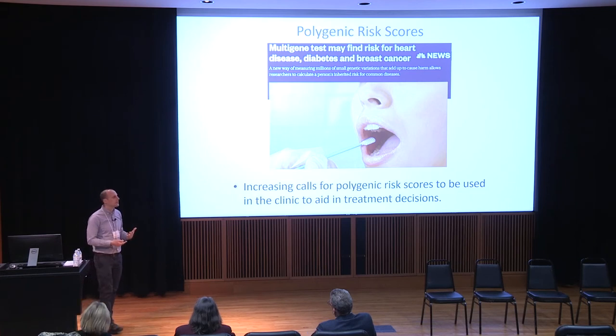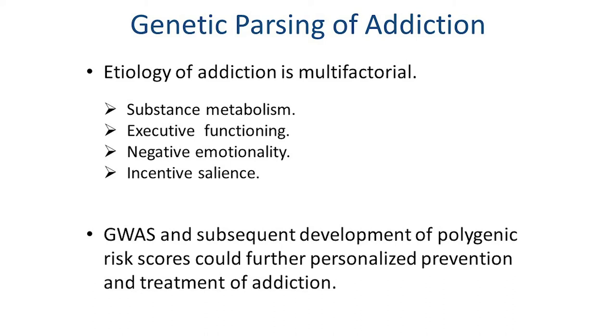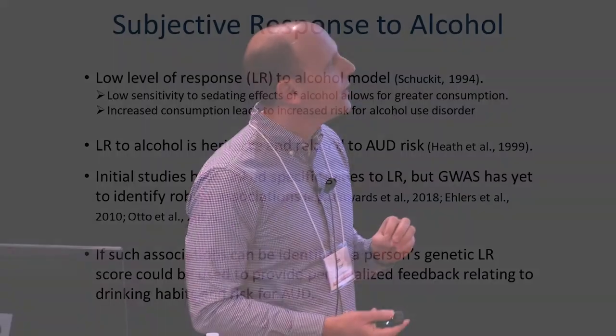Creating scores for alcohol use disorder is only one interesting application. Substance use disorders are multifactorial, so we can parse more refined phenotypes — substance metabolism, sensitivity to alcohol, executive functioning, aspects of personality — and use these in treatment and prevention settings. Importantly, addiction is a process, and the genetic risk factors relevant to prevention may differ from those relevant to treatment, so we can develop scores useful at different stages.